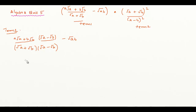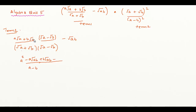Simplifying further: the denominator is like (a + b)(a − b), which gives a² − b², so the denominator becomes a − b. In the numerator, multiplying through: a times √a times √a gives a², then a times √a times (−√b) gives −a√(ab), then b times √b times √a gives +b√(ab), and then −b times √b times √b gives −b².